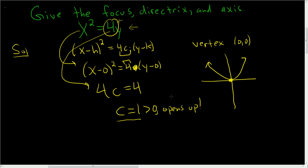The absolute value of c is the distance between the vertex and the focus. So this distance here is 1, meaning this point here is (0, 1) — and that's the focus. So the focus is (0, 1). You have to know where everything is in relation to everything else in these problems.